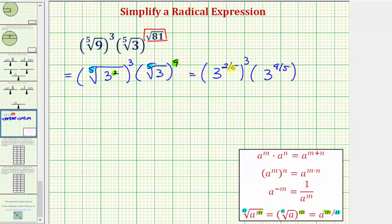Now here we have powers raised to powers. When we have powers to powers, we multiply the exponents. So let's write this as three raised to the power of two-fifths times three, which would be six-fifths. So three to the six-fifths times here we have three to the nine-fifths.